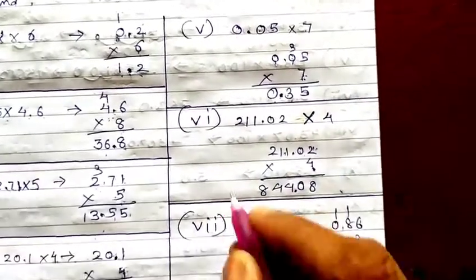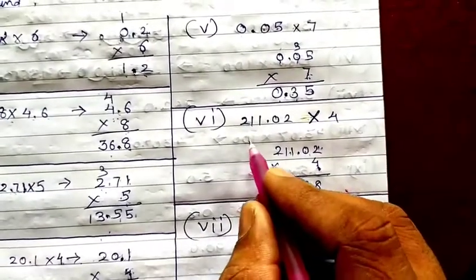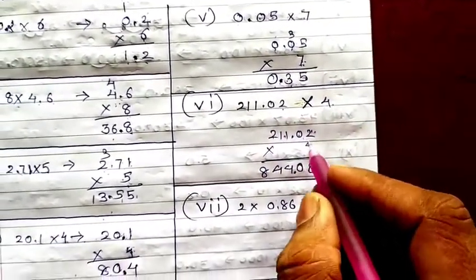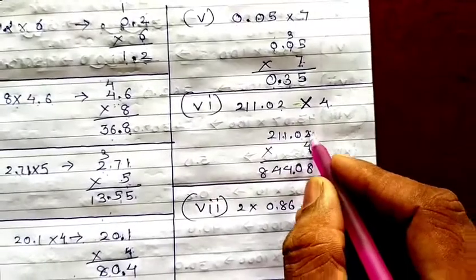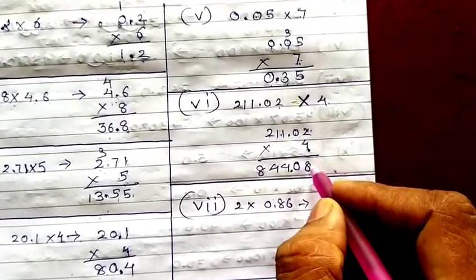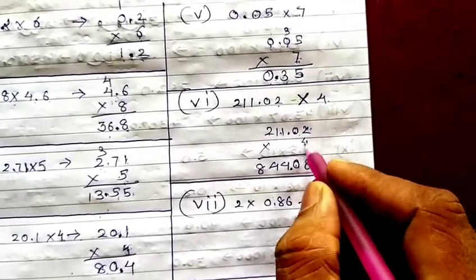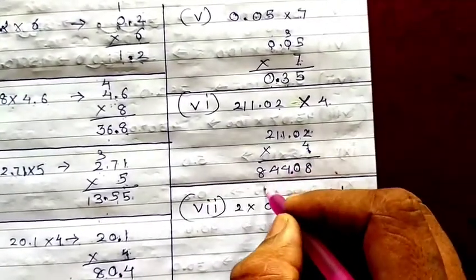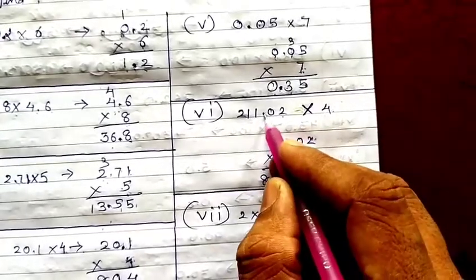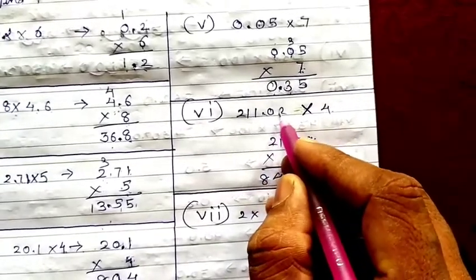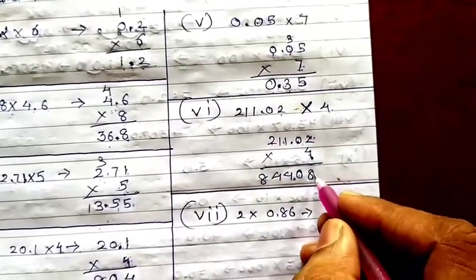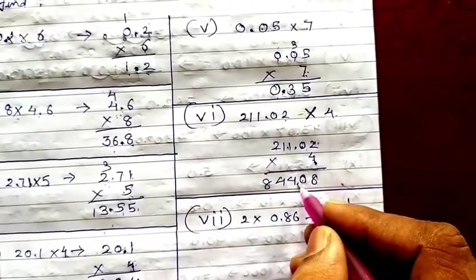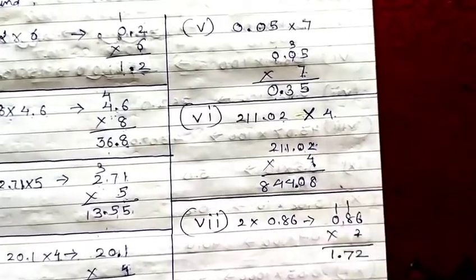Then 11.02 into 4. 4 twos are 8. 4 zeros are 0. 4 ones are 4. 4 ones are 4. 4 twos are 8. Wait — where to put the decimal? After the decimal there are 2 digits, so leave 2 digits from the last and place your decimal there.